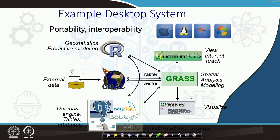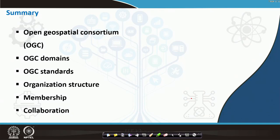In summary, we covered what open source means, the Open Geospatial Consortium (OGC), standards, organization structures, and various software and licenses available in open source. In the next class, we will look at OGC in much more detail, and also cover softwares not touched here — including urban analytical tools. Thank you very much.